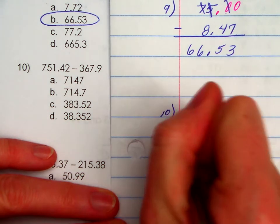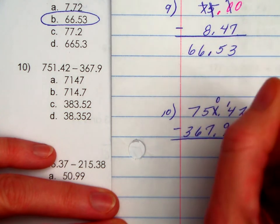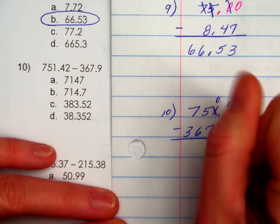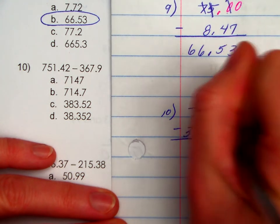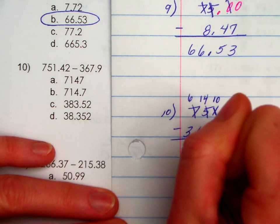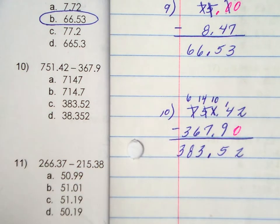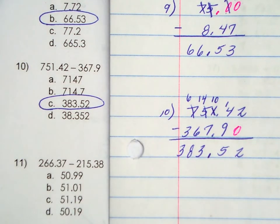I added a placeholder. I'm going to subtract. I'm going to regroup as needed. Bring down the decimal. 383.52. That was a lot of regrouping. I hope you tried that one independently first.